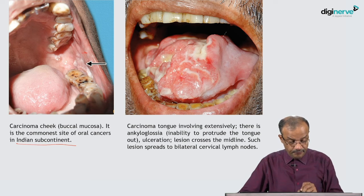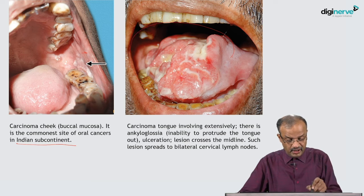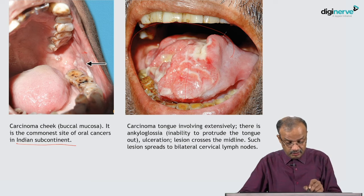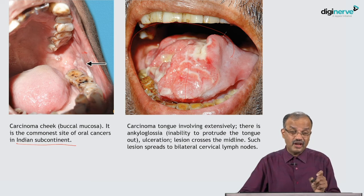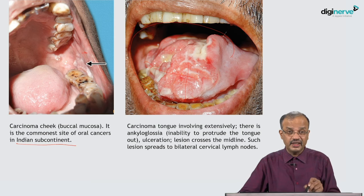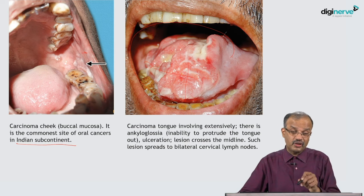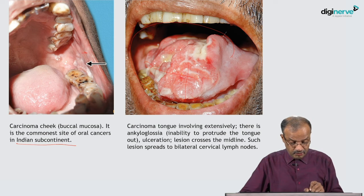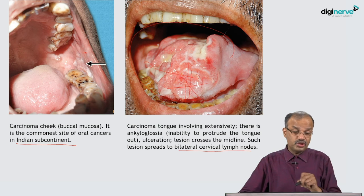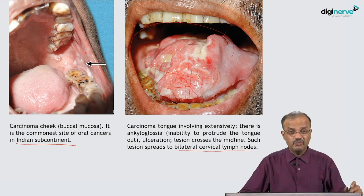Carcinoma tongue can involve the tongue extensively, causing ankyloglossia — inability to protrude the tongue. The person cannot protrude it due to extensive tongue cancer involvement. You can see the everted edge. It is important to note whether a lesion crosses the midline — especially tongue, palate, and lip lesions. A malignant ulcer starting at one margin and flooding across to the other side adversely affects staging and outcome. Such lesions spread to bilateral cervical lymph nodes once they cross the midline, which again indicates poor prognosis.